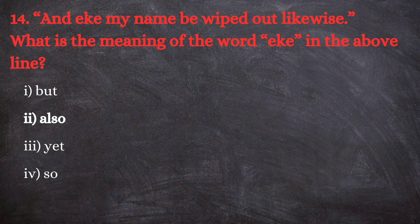Question number 14: 'And eke my name be wiped out likewise' — what is the meaning of the word 'eke' in the above line? The options are: first, but; second, also; third, yet; and fourth, so. The correct answer is also. 'Eke' is an archaic word meaning also.